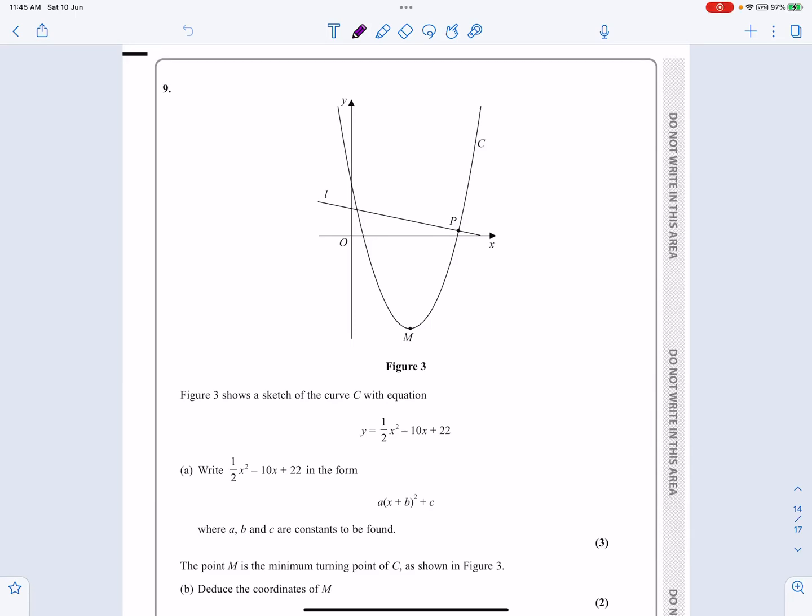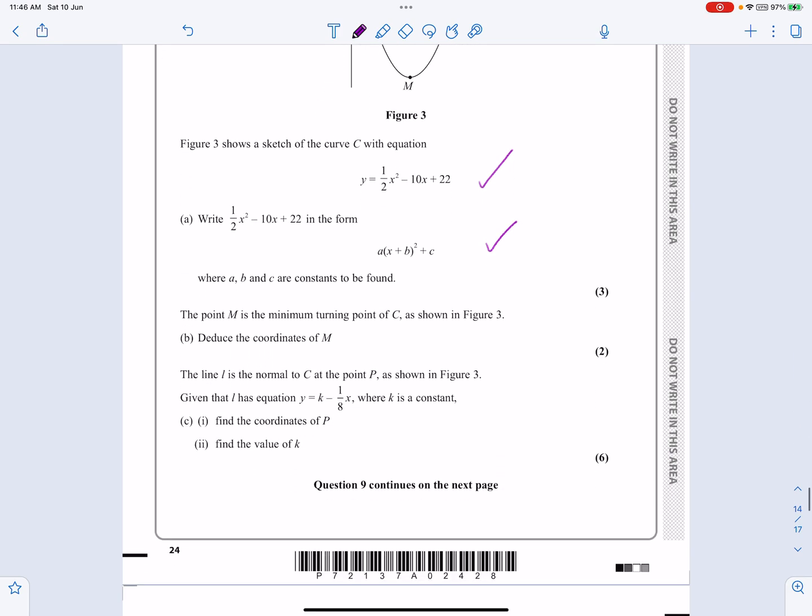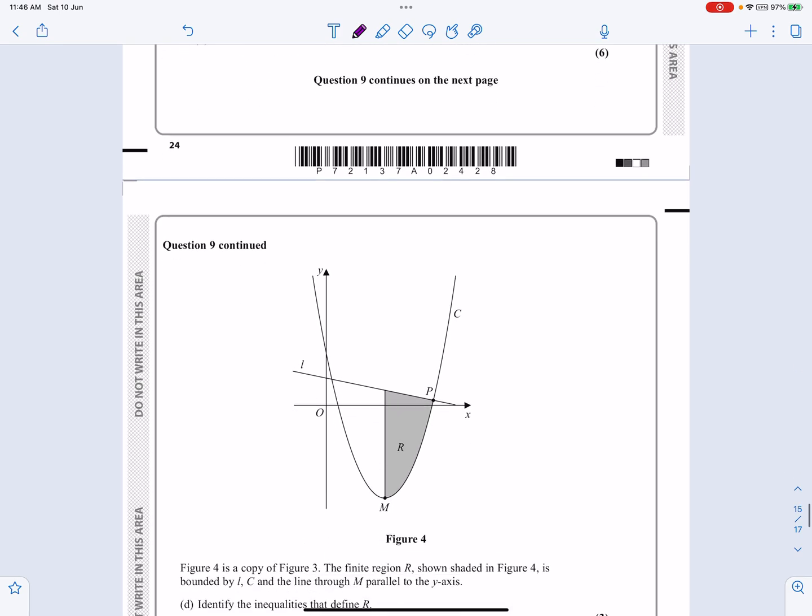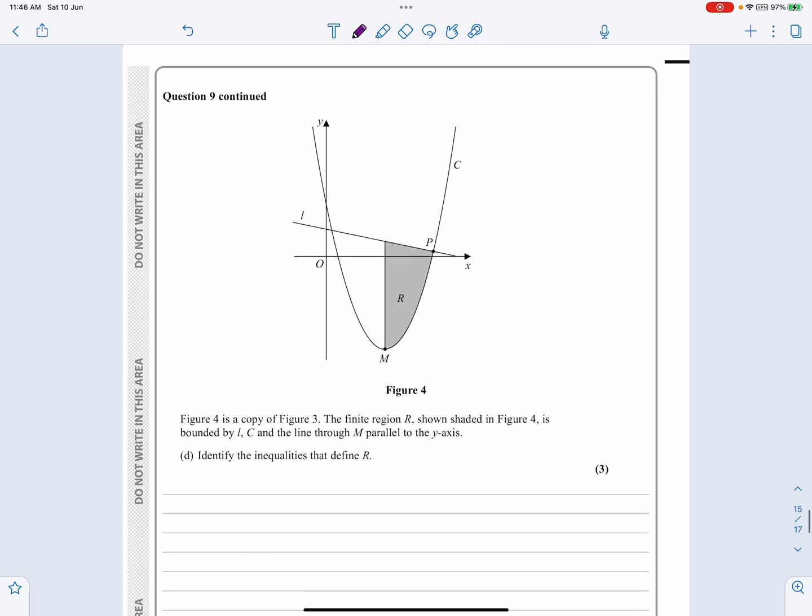Okay, this is the P1 paper from October 2022. It's question number 9. As we can see, it's a quadratics question. We're going to be completing the square here. Then later on, we're going to be looking at quadratic graphs, and if we just move on a little bit further, there's going to be some inequalities as well.